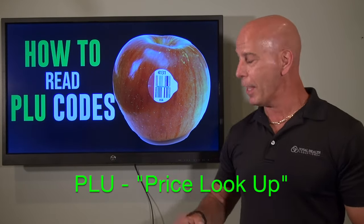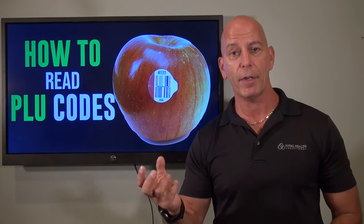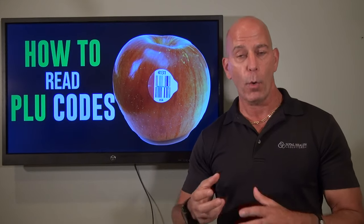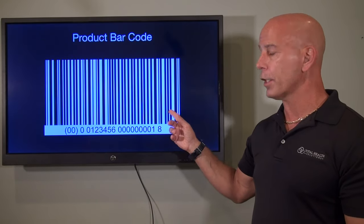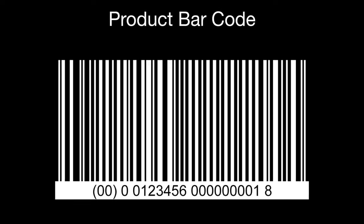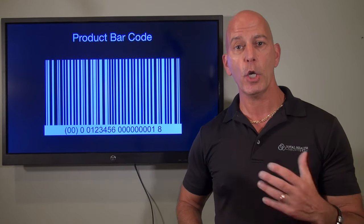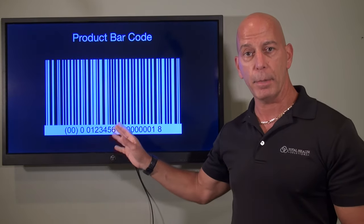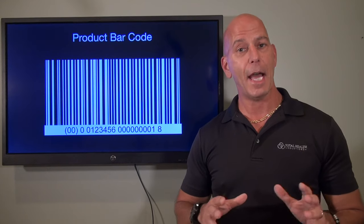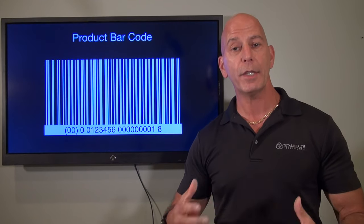What is a PLU code? PLU code means price lookup. Those are the little code numbers you see right on the side — a barcode that, if you're picking up an avocado or a tomato or any kind of produce, you scan it across and it'll actually read it. This is different from the other kind of barcodes, which are your typical product barcodes. Those typically have numbers at the beginning indicating the country of origin, and different numbers in between for the product. Those are not PLU codes.